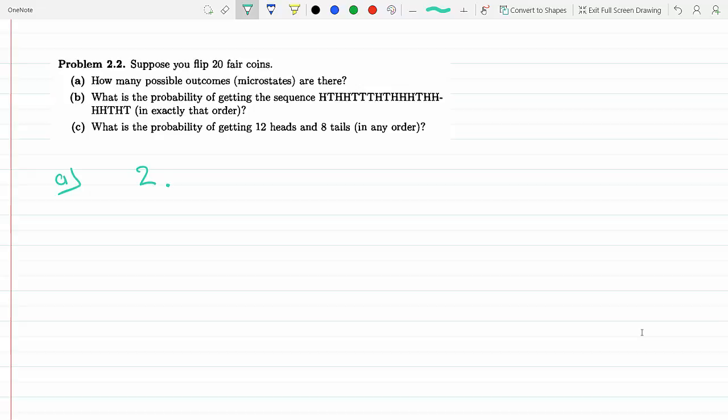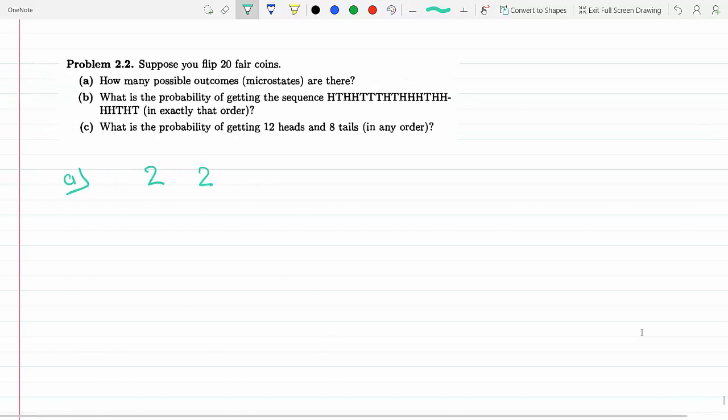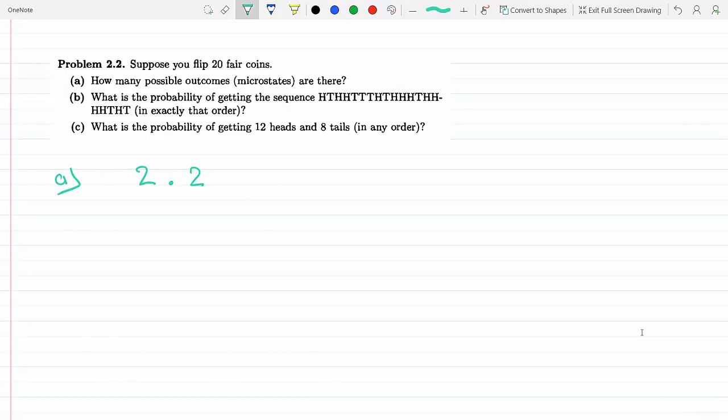And then on the third coin, same thing. And then I can keep on going till I get 20 coins, so that's also two possibilities. So I'm gonna have to repeat this 20 times. So the number of microstates on part A would be 2 to the 20. Now on part B it says: